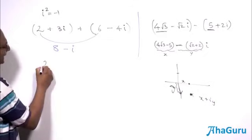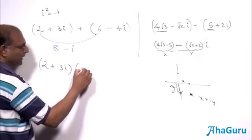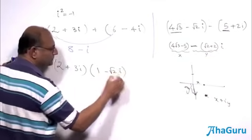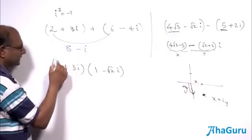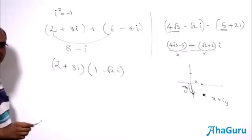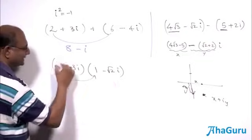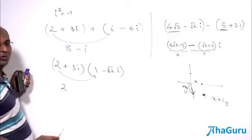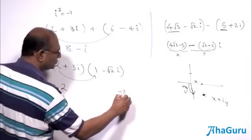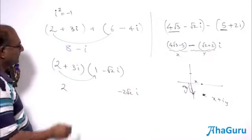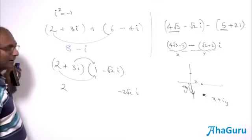When you have multiplication, let us try an example: (2 plus 3i) times (1 minus root 2 i). You just do it step by step — this into this, this into this, and so on. The first term gives 2. The second term is 2 times minus root 2 i, which gives minus 2 root 2 i — that is an imaginary quantity. The third step: 3i times 1 gives an imaginary number.